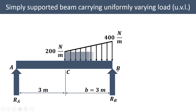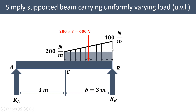We have to first convert this uniformly varying load into two parts. First, we convert this part into a uniformly distributed load of 200 Newton per meter — that is the rectangular distribution of 200 Newton per meter throughout. The total load at top is 400, and subtracting 200 gives a triangular distribution height of 400 minus 200, that is 200 Newton per meter.